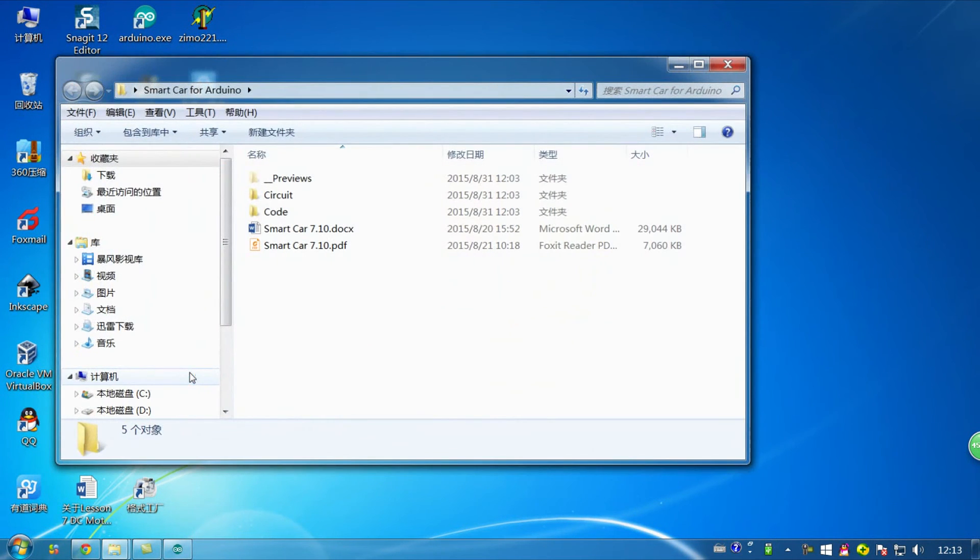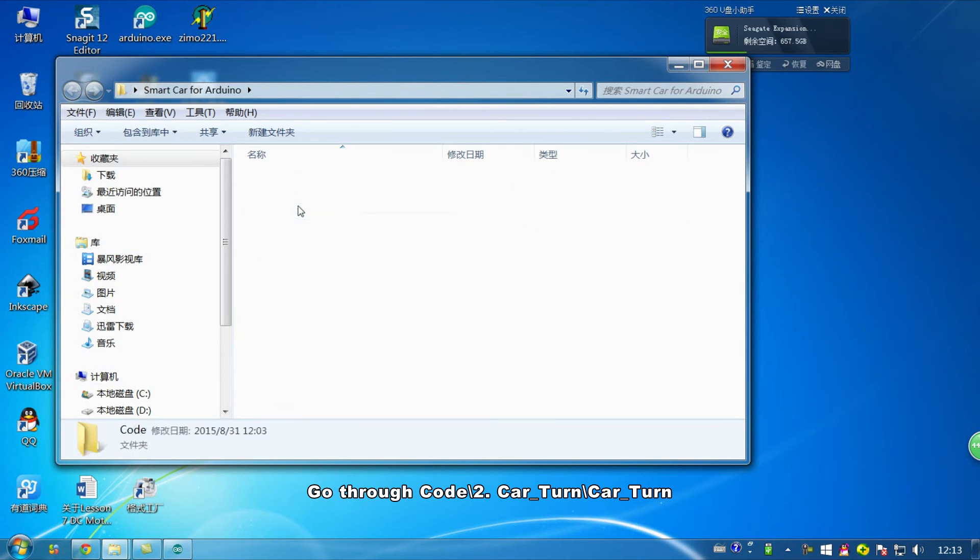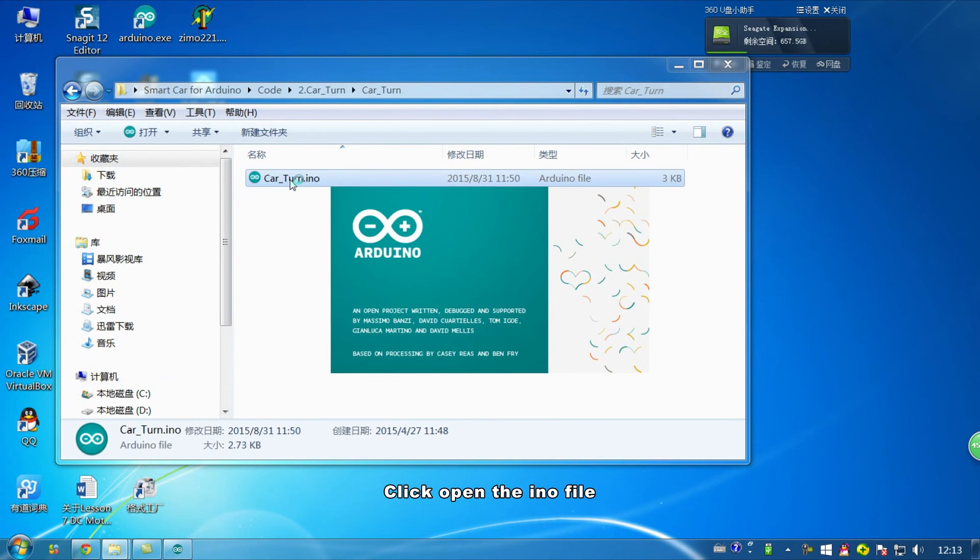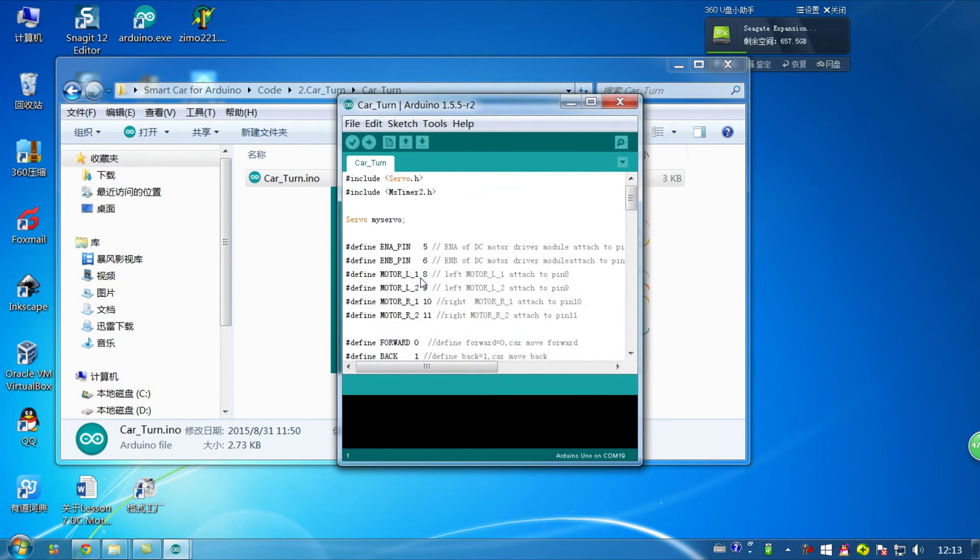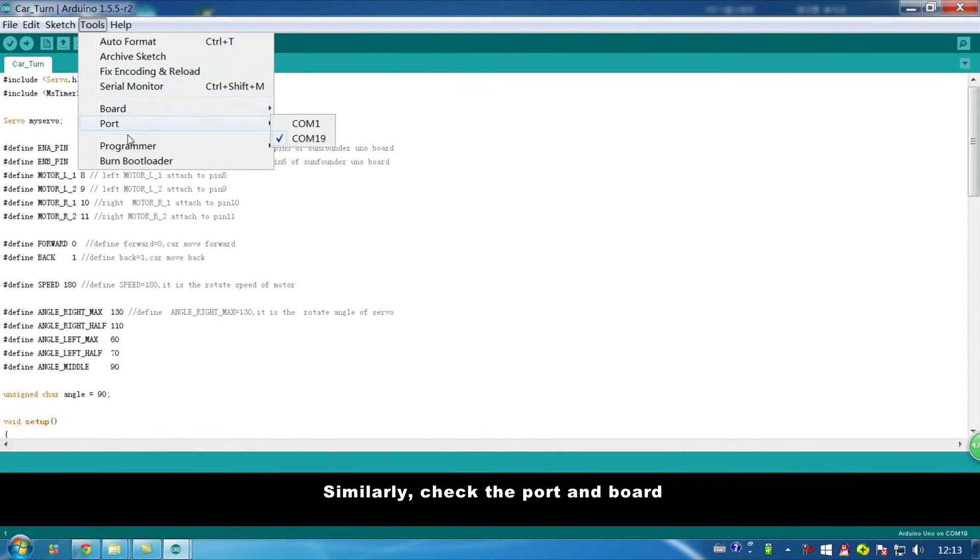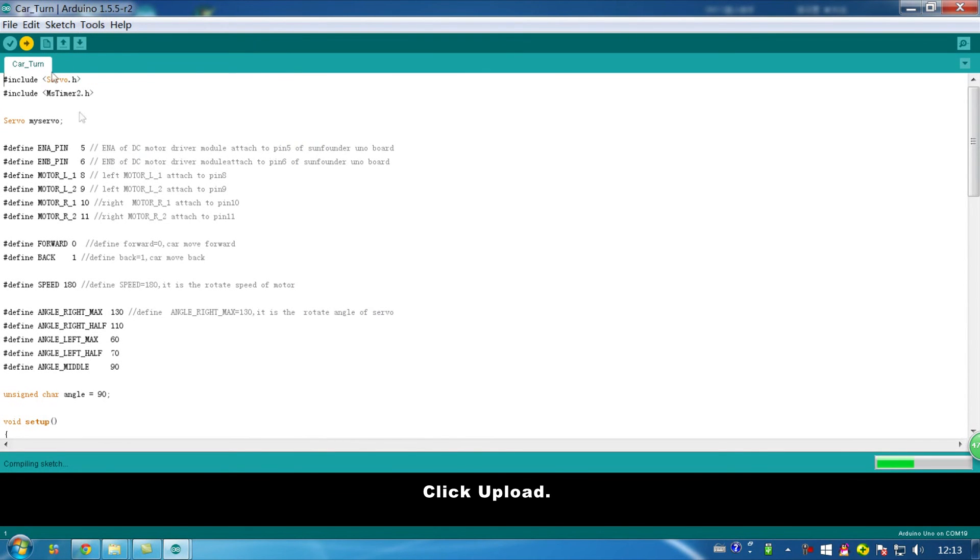Then click open the folder again. Go through code 2, Car turn, Car turn. And click open the ino file. Similarly, check the port and board. Click upload.